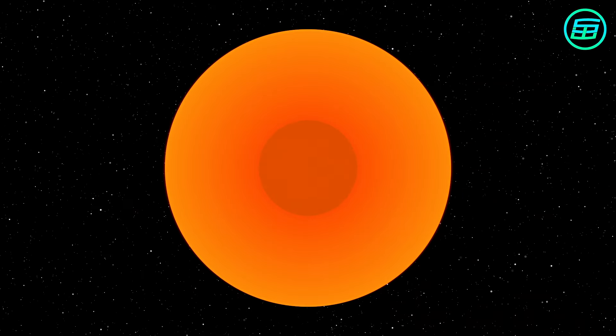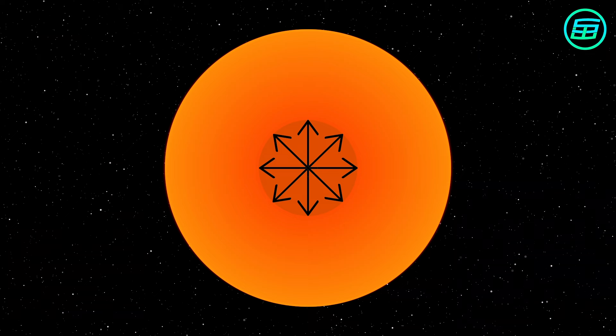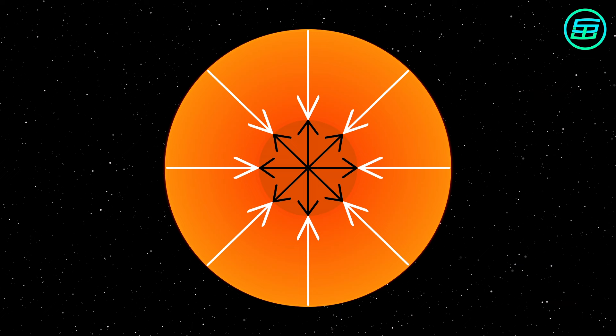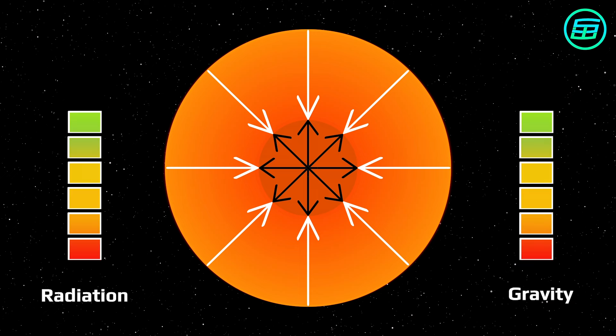Inside the star, the outward pressure of radiation from the core is opposed by the inward force of gravity due to the star's mass. For most of the star's life, these two forces are in balance.